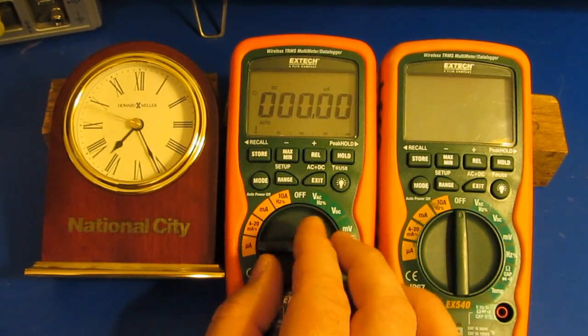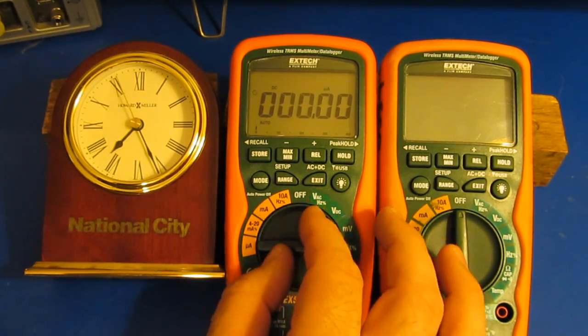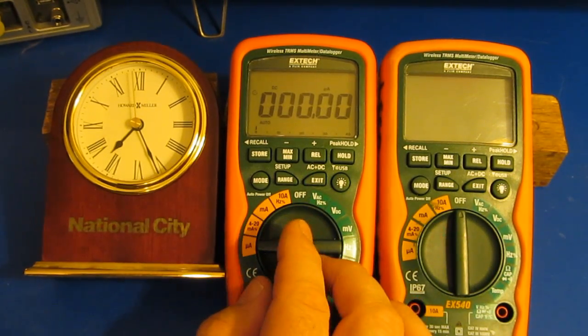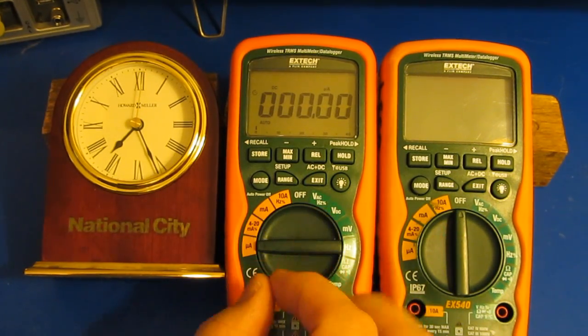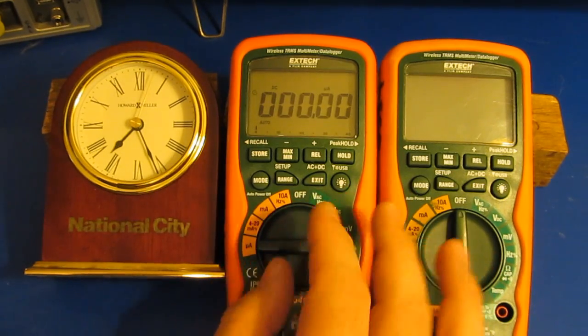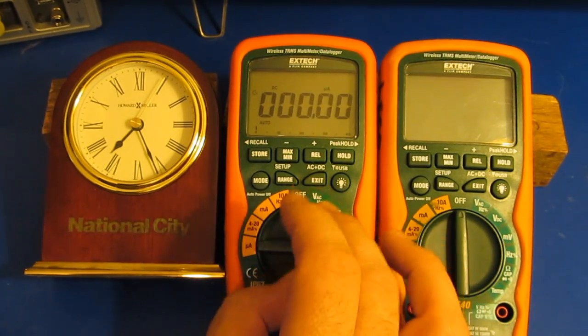Once I took the selector switch apart, I noticed that one of the contacts resting heights was a little bit lower than the other five. And I used an exacto knife to thin down some of the plastic and that seems to have corrected that problem.